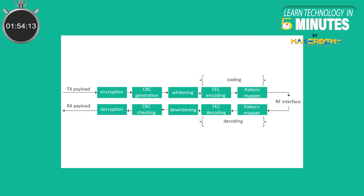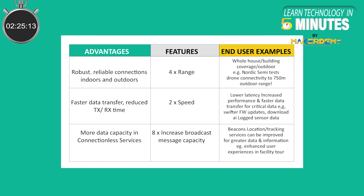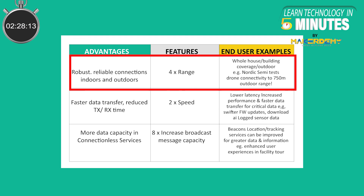Now, let's look at the range improvement. Bluetooth 5.0 also introduced a long-range mode that utilizes an error correction technique called forward error correction. FEC allows the receiver to recover data from errors that occur due to noise and interference. So instead of requiring retransmission of data when an error occurs, the receiver can recover the originally transmitted data by utilizing the redundancy in the data. This mode is referred to as the coded physical radio mode. The obvious benefit is the increased range, with the trade-off being higher power consumption and reduced speed. Ranges as far as 750 meters in line of sight have been recorded while testing with the long-range mode.